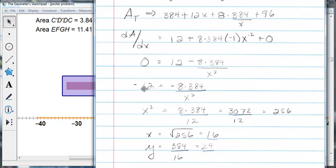So then I just bring the 12 over to the other side and do a little bit of cross multiplication. And we get x squared is equal to 8 times 384 divided by 12, which is 256. Isn't that nice?